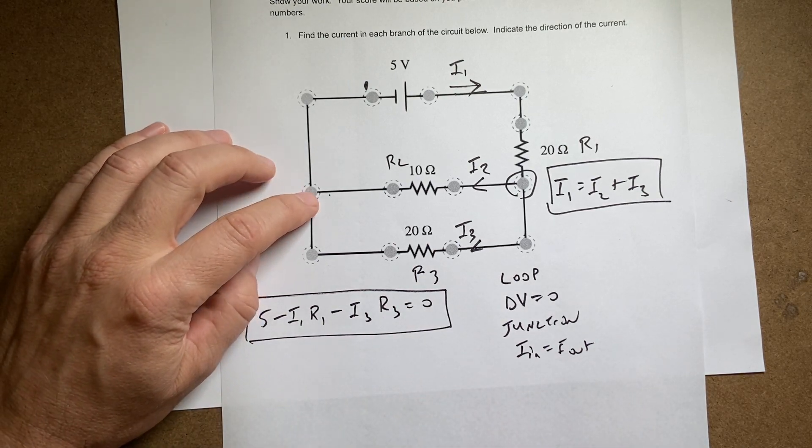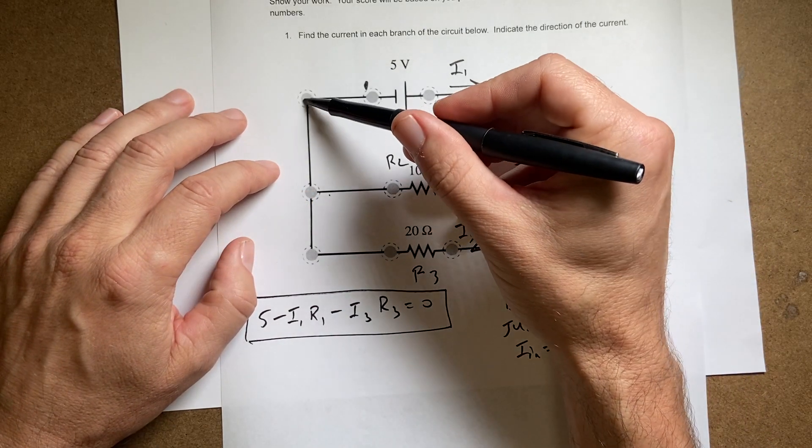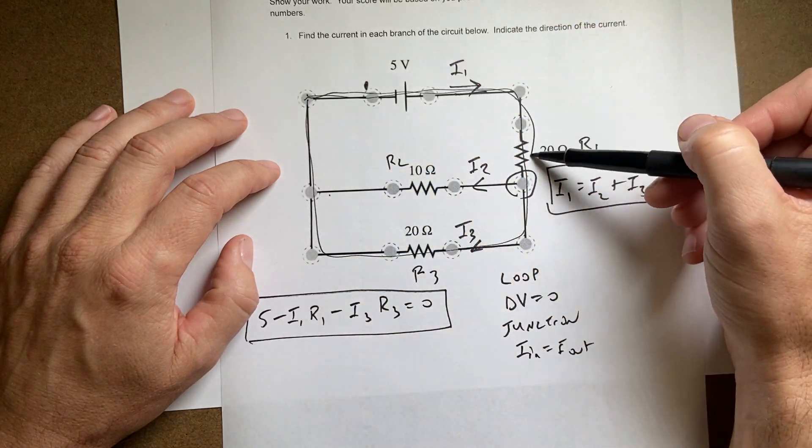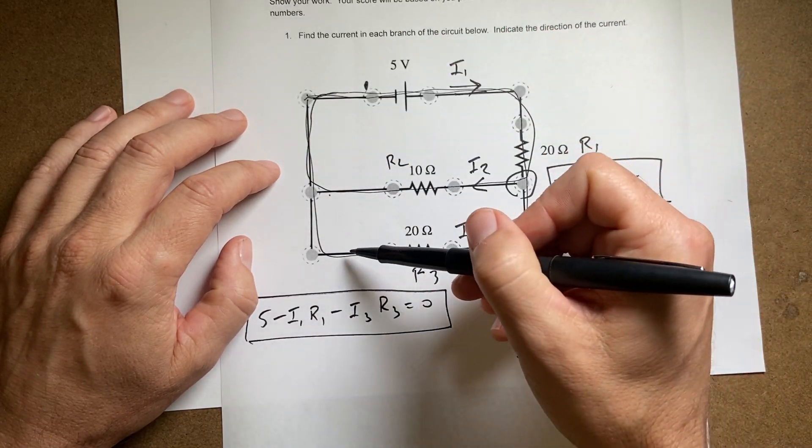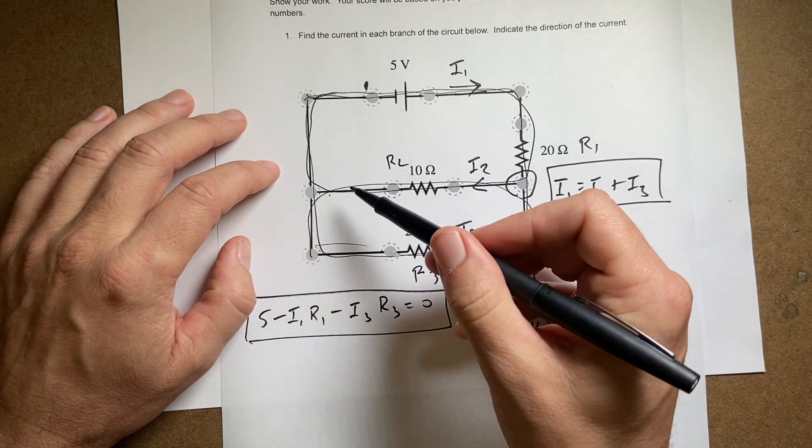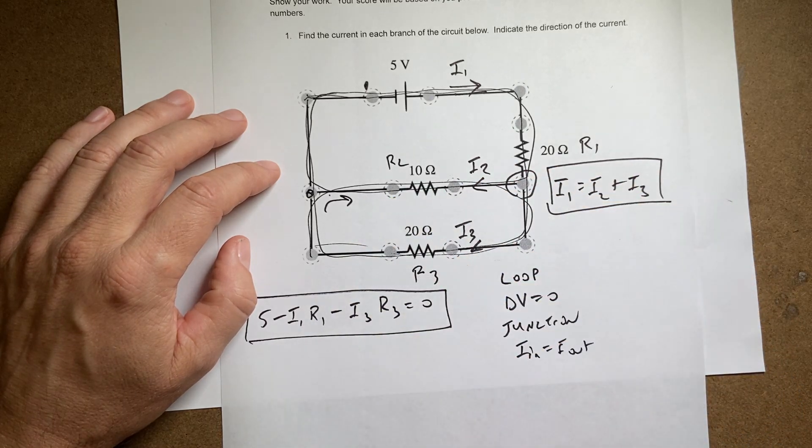Okay now we need to do another loop. So there's actually three loops here and you can do two of them. Here are the three loops. One, two, and three. And it doesn't matter which order you go in. I'm gonna do this loop right here. I'm gonna start right here. I'm gonna go that way. Just for fun.